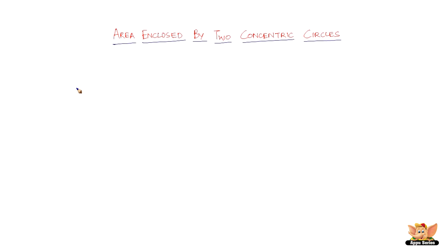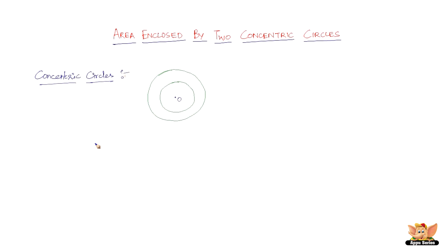In this video, let us check out the area enclosed by two concentric circles. Before we get into that, let me clarify what concentric circles are. Concentric circles are nothing but two or more circles which have the same center.